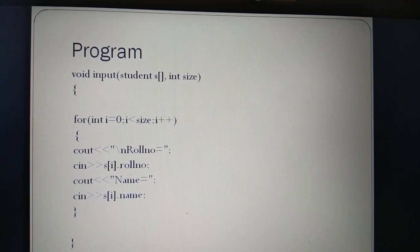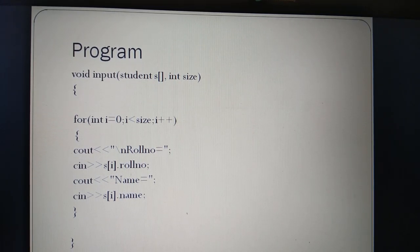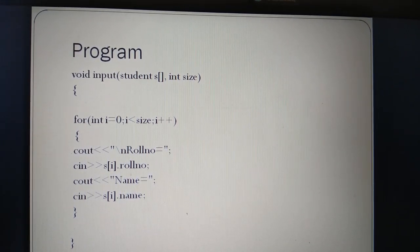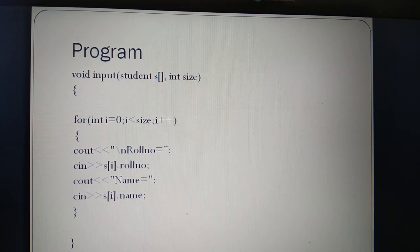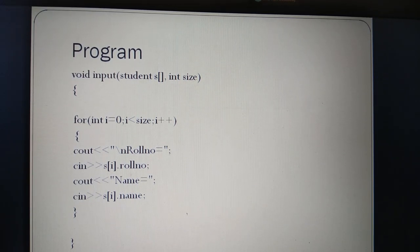Within the function there is a for loop. The initial value of i is equal to 0, and it will execute till the condition is true. The size is equal to 3 because we have passed the value 3 in the main function, so the size will be 3. It will be executed 3 times, which means input will be taken for 3 students from the user. The i value will be incremented by 1 each iteration. When i value is equal to 3, the condition will be false and it will not execute the input from the user.